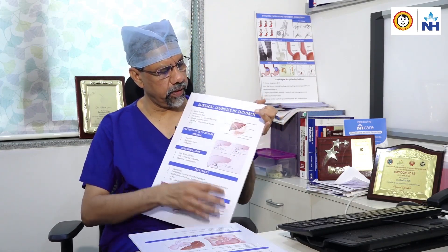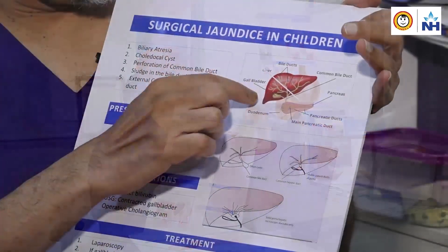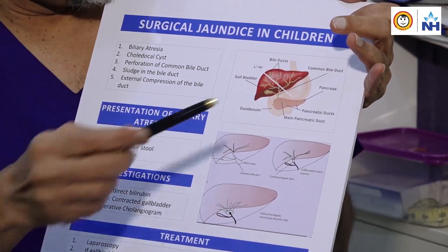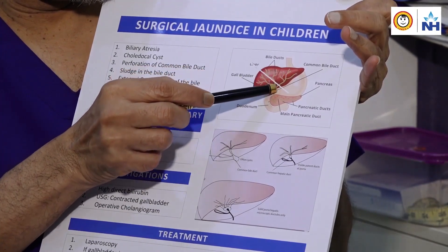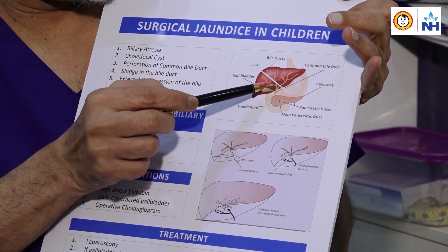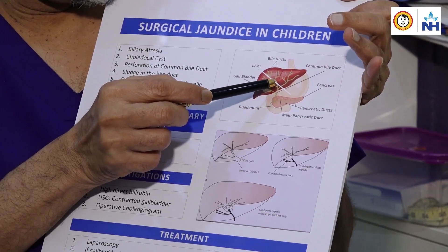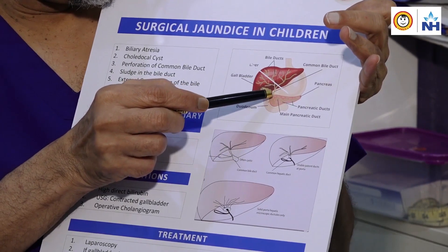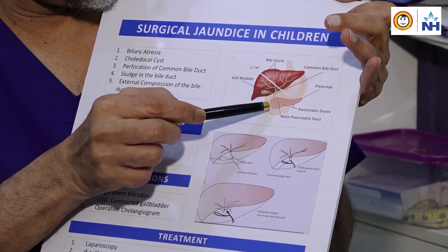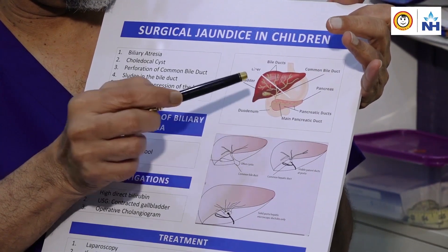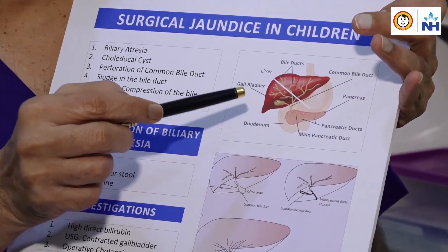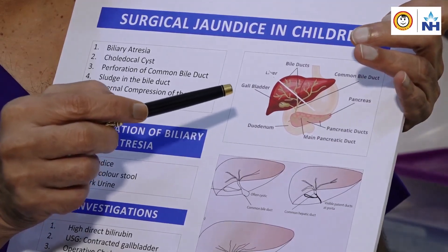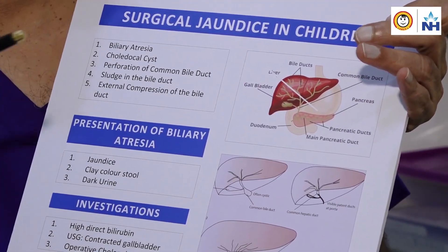Let me take you to the normal anatomy of the liver and bile duct. From the liver, the bile ducts come and join the small bowel. There is a left bile duct, right bile duct, then the cystic duct joins to form the common hepatic duct and common bile duct, which joins the pancreatic duct and opens in the duodenum. Any obstruction in that area will give rise to what we call surgical or obstructive jaundice.